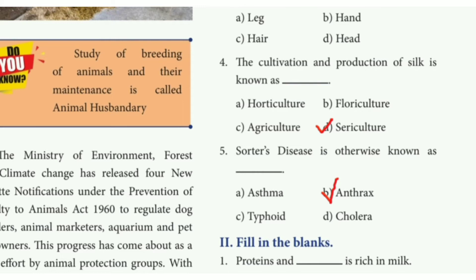Fourth one: the cultivation and production of silk is known as — the answer is option D, sericulture. Fifth one: anthrax disease is otherwise known as — the answer is option B, anthrax.